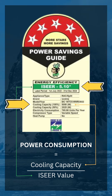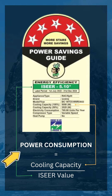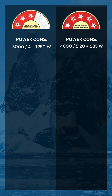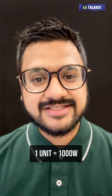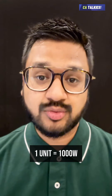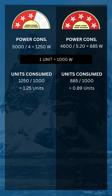Star ratings ticker pe mentioned cooling capacity ko ISEER value se divide karke aapko power consumption per hour mil jaayegi. The 3-star AC consumes 1,250 watts per hour while the 5-star AC consumes 885 watts per hour. Since 1 unit of electricity equals 1,000 watts, the 3-star AC consumes 1.25 units per hour while the 5-star AC consumes only 0.89 units per hour.